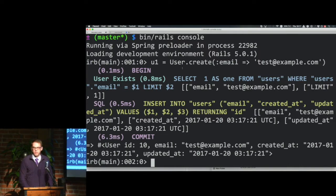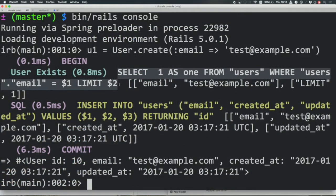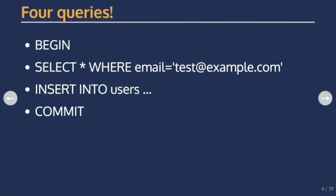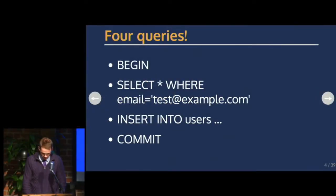You can see there are four queries here. We're beginning a transaction, selecting from the database to find whether any users already have this email address. If that returns zero users, we insert a record. If the insert goes well, we commit the transaction. Rails isn't sending those as part of one prepared statement — it's four round trips to the database. Begin is a round trip, then select, then insert, then commit. If your database is on a different machine or in a different data center, this can add a lot of latency to your application, especially if you're doing a lot of creates or can't run in a threaded environment.